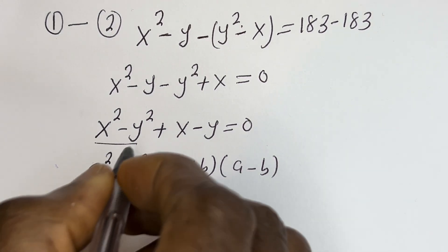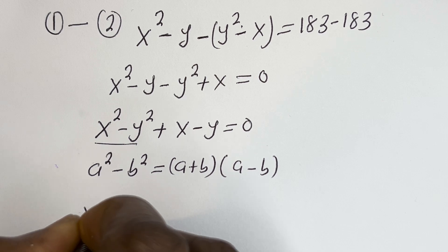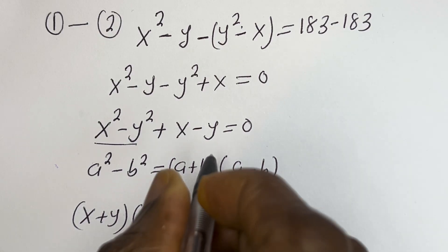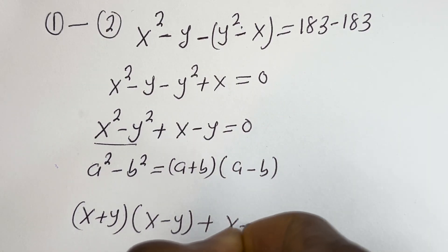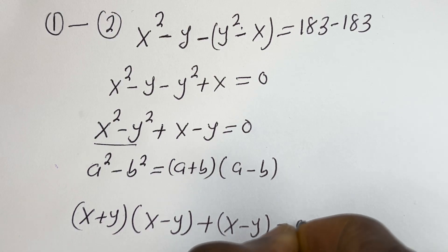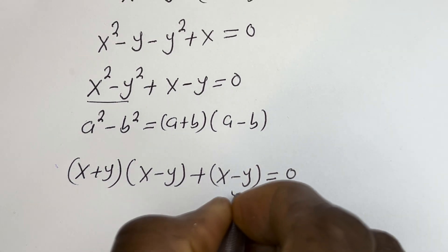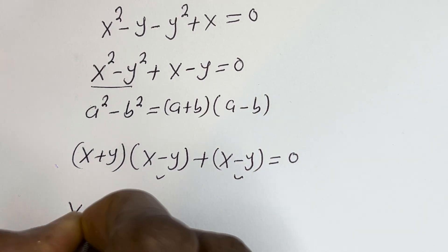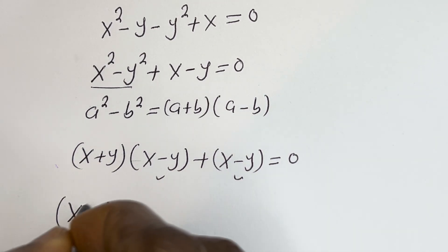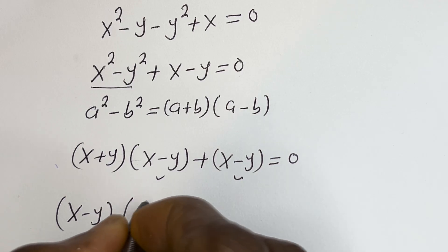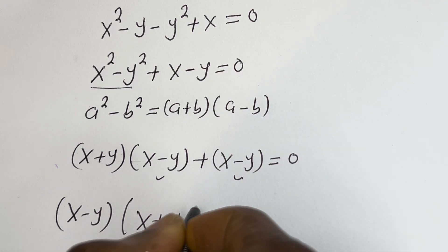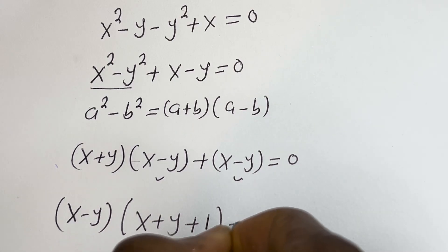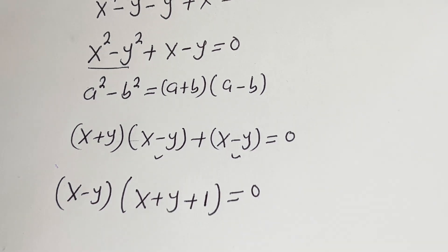Then this can be written as (s plus y)(s minus y) plus (s minus y) is equal to 0. Here you can see that (s minus y) is common — let's factor it out. We get (s minus y) times (s plus y plus 1) is equal to 0.